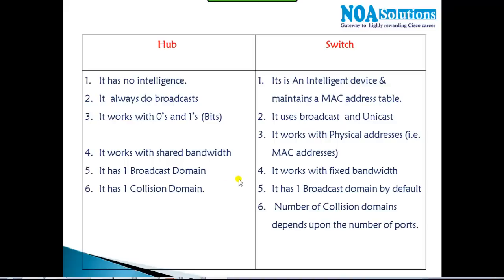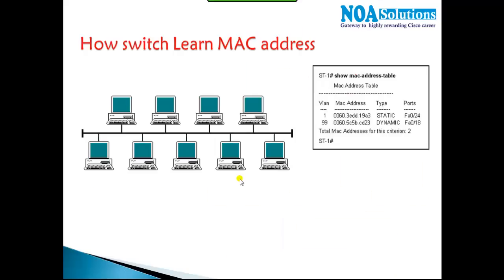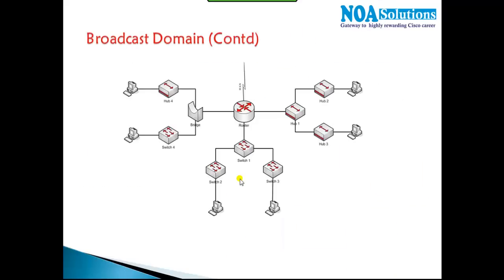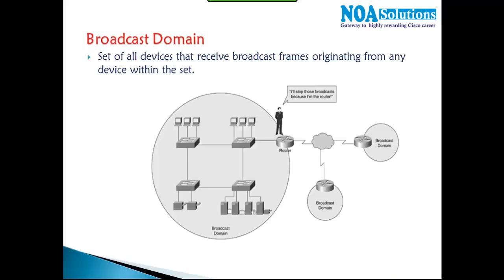Let us first try to understand what broadcast domain and collision domain are, and then we'll come back to the difference between hub and switch. The broadcast domain means the set of devices receiving the broadcast originated by any one device within the set. Now if I take an example — I have a very big network with some switches.